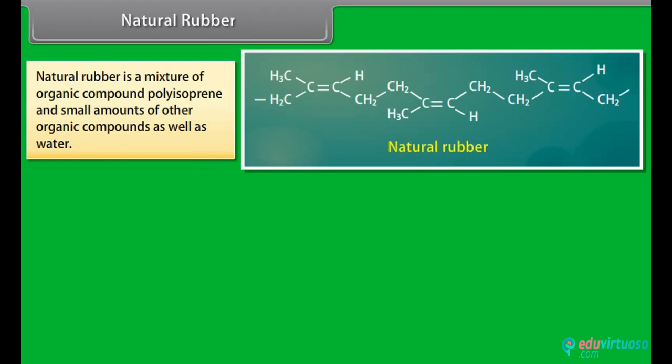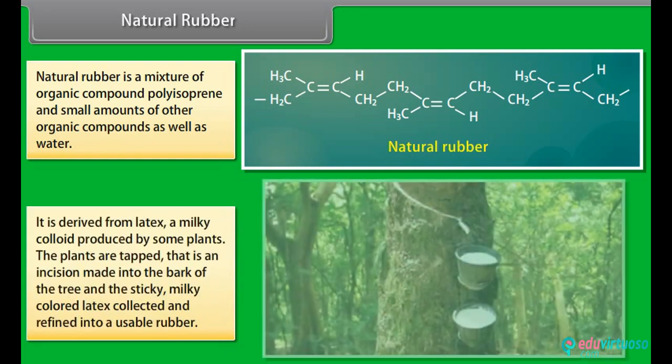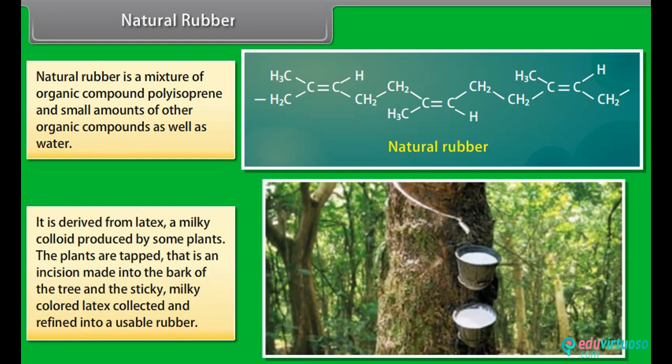Natural rubber: natural rubber is a mixture of the organic compound polyisoprene and small amounts of other organic compounds as well as water. It is derived from latex, a milky colloid produced by some plants. The plants are tapped — that is, an incision is made into the bark of the tree — and the sticky, milky colored latex is collected and refined into usable rubber.